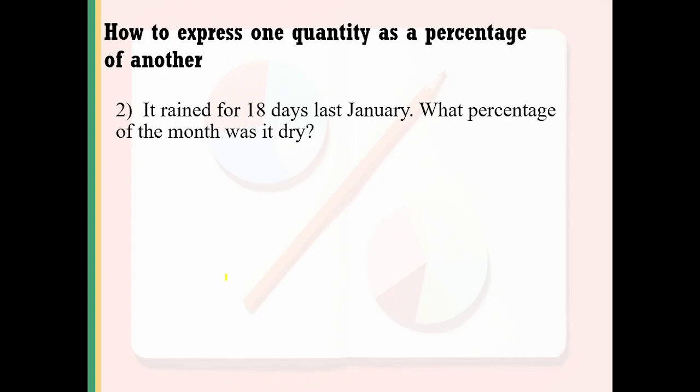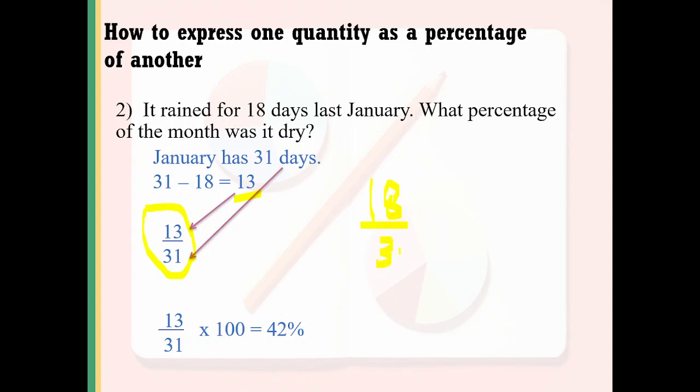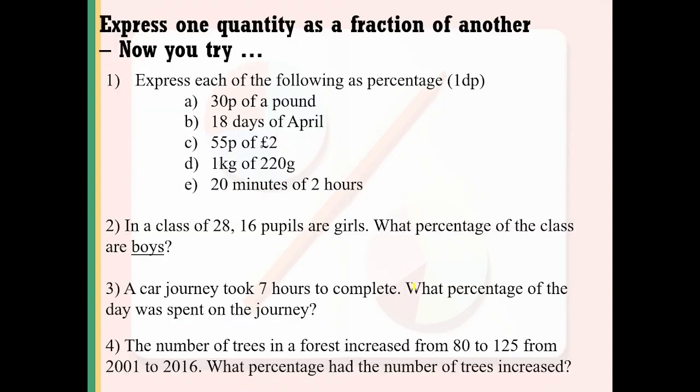It rained for 18 days last January. What percentage of days was dry? How many days did it rain? 18 days. If it rained in January which has 31 days, then dry days are 13. Divide 13 by 31 to get the percentage of dry days: 42%. If you want to calculate wet days, 18 divided by 31 times 100 gives almost 58%, because total percent of days is always 100%.